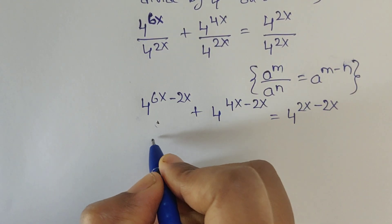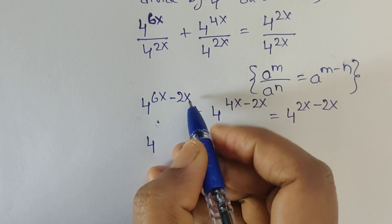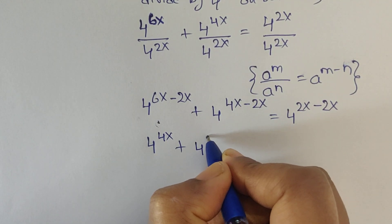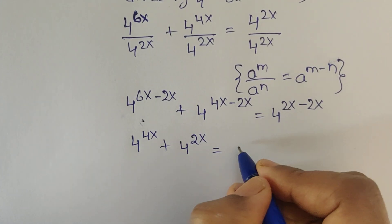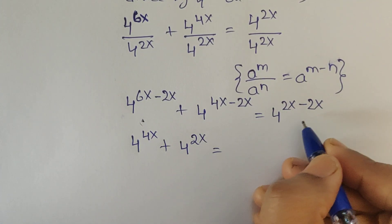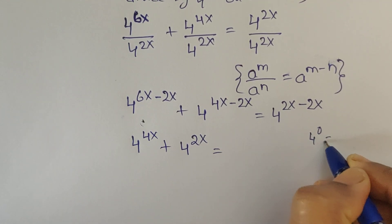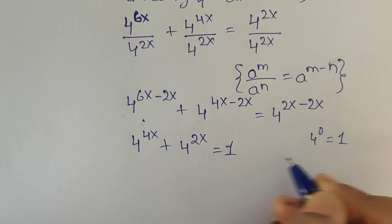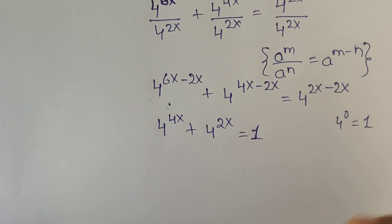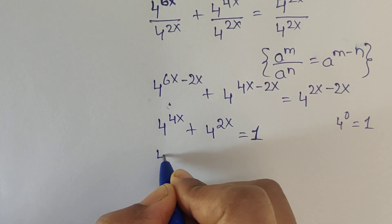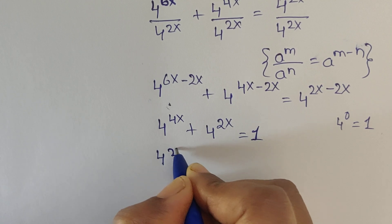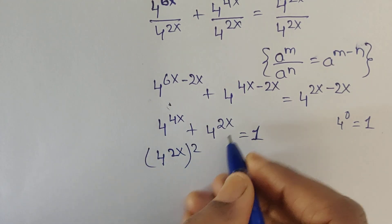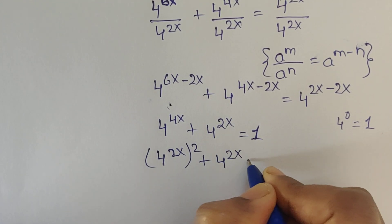So now: 4 to the power of 6x minus 2x equals 4 to the power of 4x, and 4 to the power of 4x minus 2x equals 4 to the power of 2x, and 4 to the power of 0 equals 1. So we have 4 to the power of 4x plus 4 to the power of 2x equals 1. We can rewrite 4 to the power of 4x as 4 to the power of 2x, whole squared.